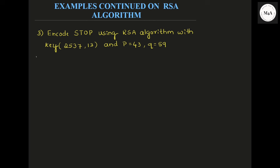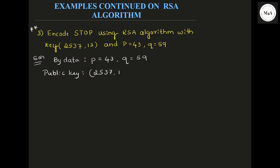Many of you asked to solve this — it is asked in your model question paper. By the given data: P is 43, Q is 59. The key given is a public key. Public key is (N, E), so N is 2537 and E is 13.